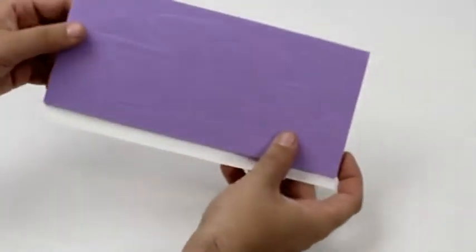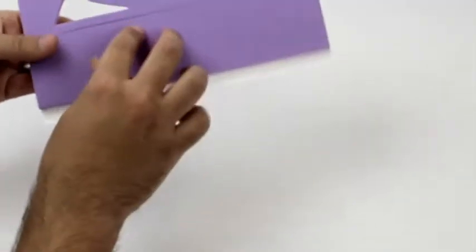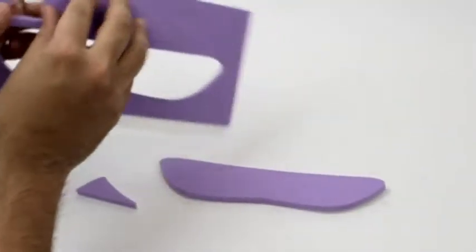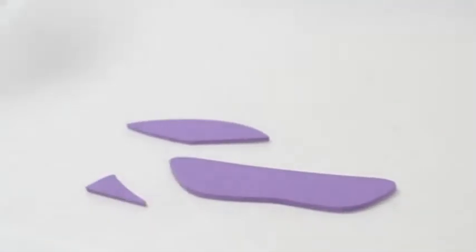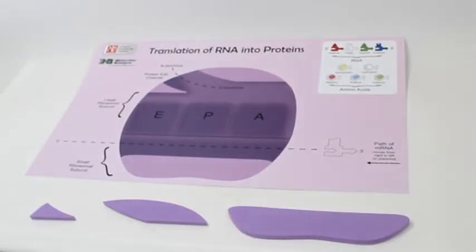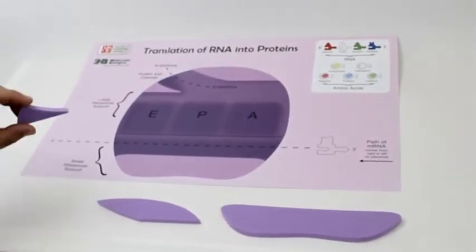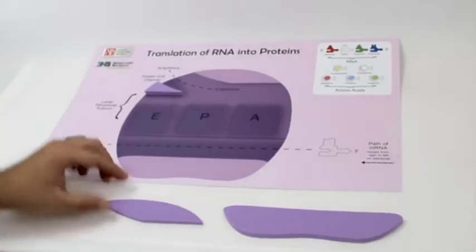The placemats will also need to have adhesive-backed foam attached in specific areas. Start by laying out a placemat, in this case the translation placemat, and organizing the foam pieces to become familiar with where they will be attached.